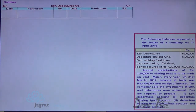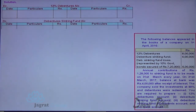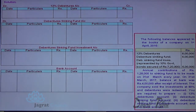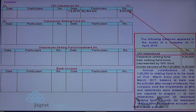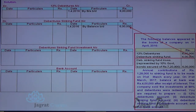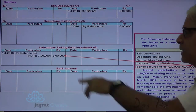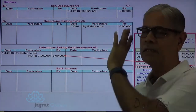This is the detail of the sum. I will open debenture account, debenture sinking fund account, debenture sinking fund investment account, and bank account. First of all, I will write down the opening balances — balance brought down. Debenture account has a liability credit balance. Sinking fund, which is profit accumulated to redeem the debenture, is 6 lakhs credit balance. Sinking fund investment is 6 lakhs debit balance.